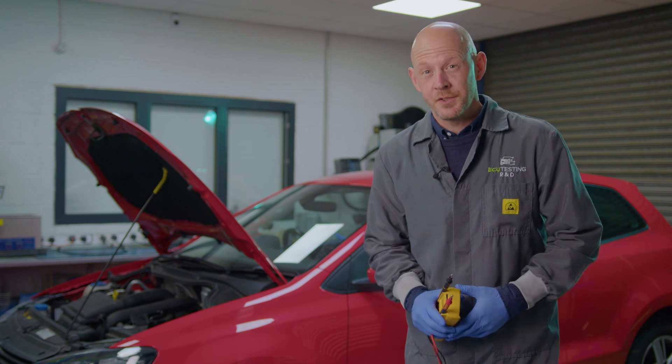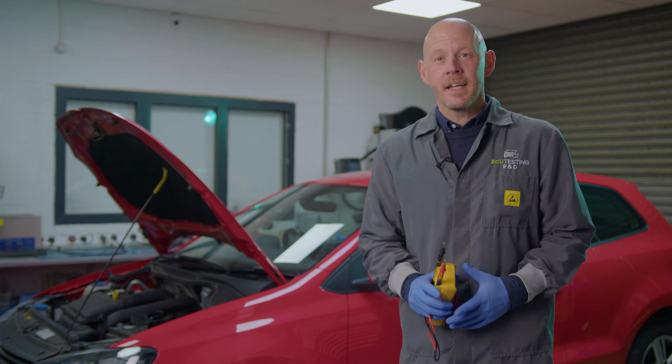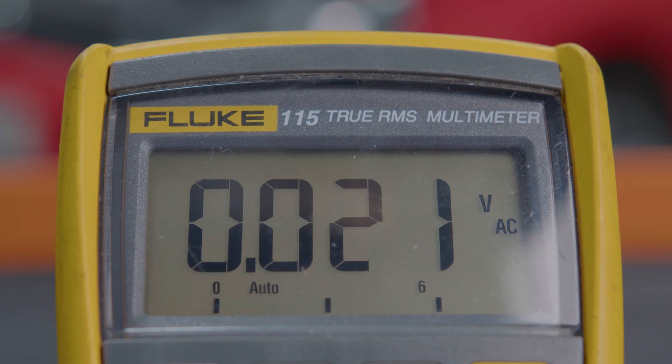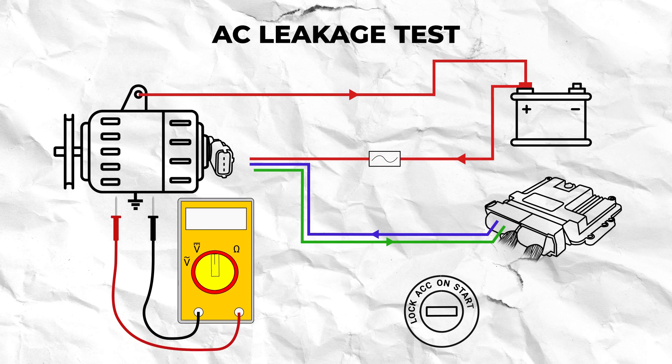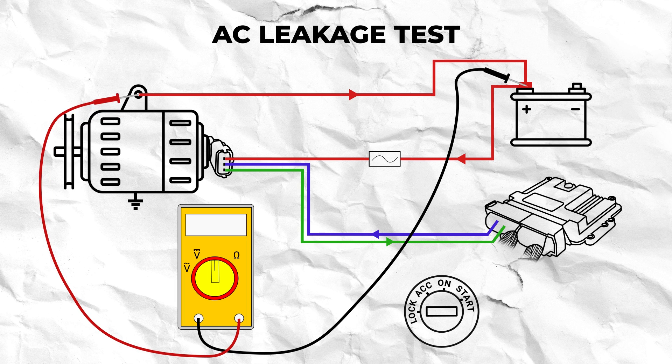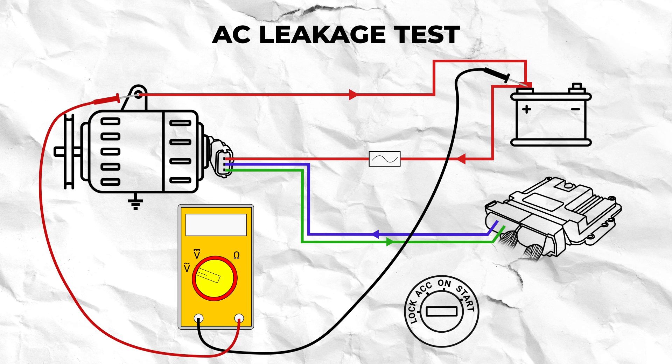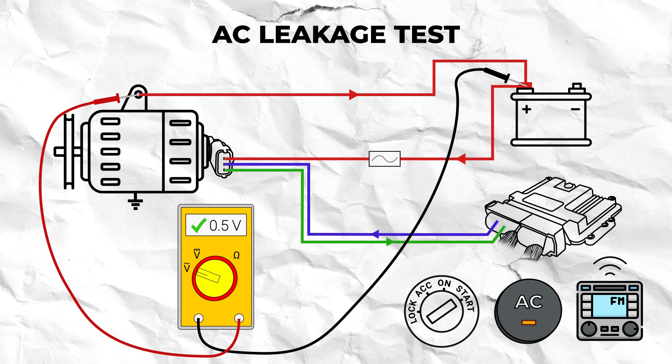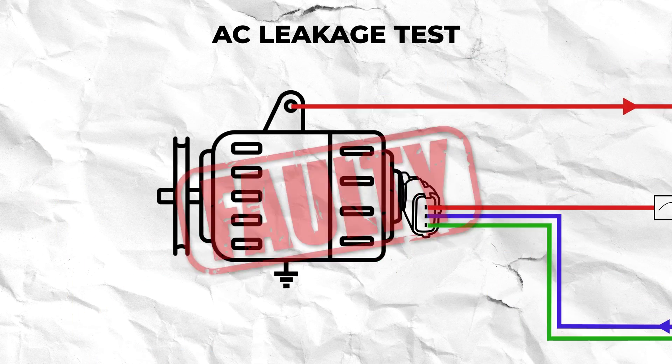If both voltage drop tests checked out okay then it's time to perform an AC leakage test. This can be done with a scope or an RMS multimeter. To complete the test with an RMS meter probe at the alternator output and battery positive and switch the meter to AC volts. With the ignition and car accessories on the reading should be no more than 0.5 volts AC. If it is over that then you've got a faulty alternator.